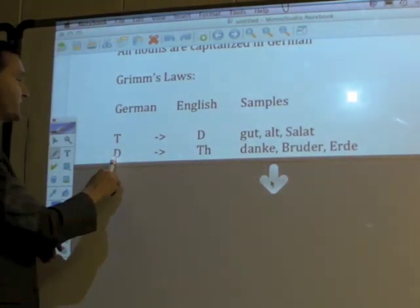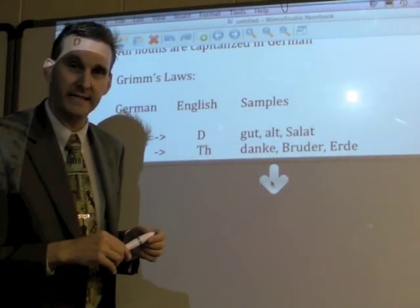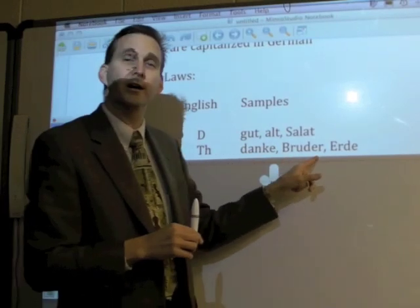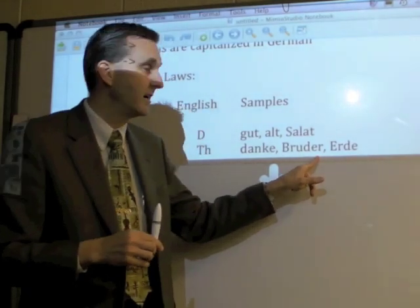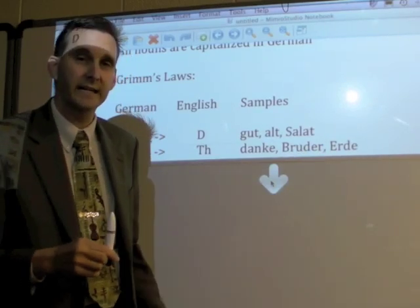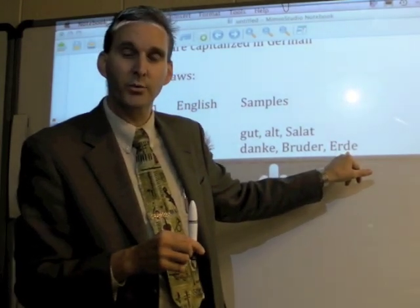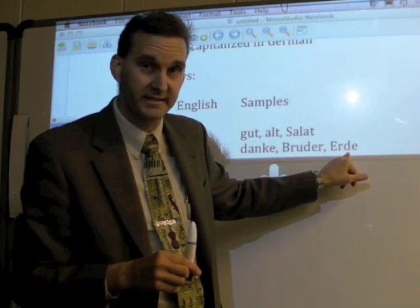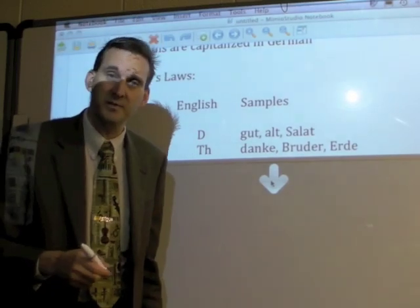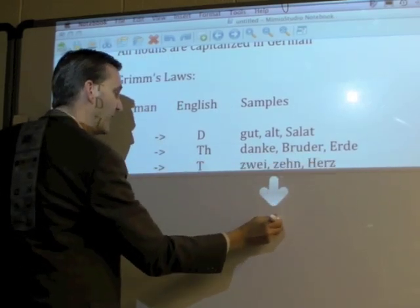The D in German becomes a TH in English. This is not every time for every word, but usually the oldest words follow this. Like 'Danke' — the D becomes TH for 'thanks'. 'Bruder' — as the D becomes TH, you can see the word 'brother'. And 'Erde' — if the D becomes TH, you can figure out the word: it's 'earth'.